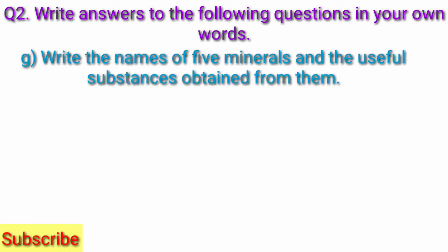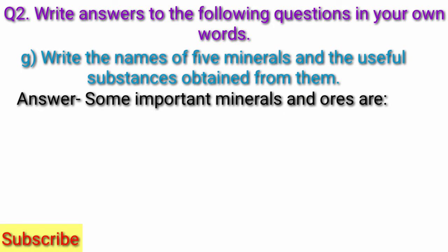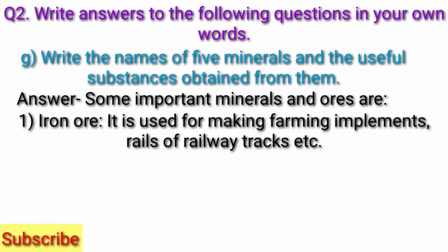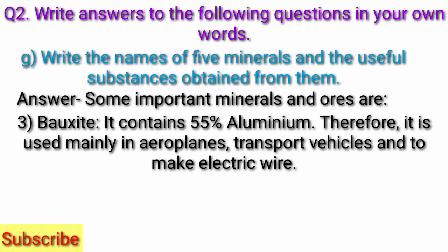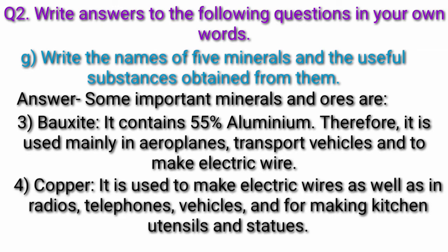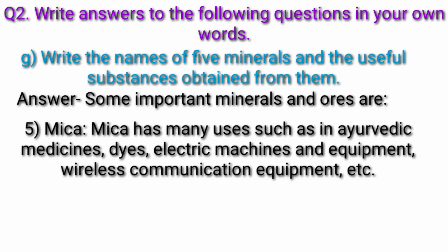Question g) Write the names of five minerals and the useful substances obtained from them. Answer: Iron ore — used for making farming implements and rails of railway tracks. Manganese — compounds of manganese are used in preparation of medicines and for giving a pink tinge to glass; also used in electrical appliances. Bauxite — contains 55 percent aluminium, therefore used mainly in aeroplanes, transport vehicles, and to make electric wire. Copper — used to make electric wires, radios, telephones, vehicles, kitchen utensils, and statues. Mica — used in ayurvedic medicines, dyes, electric machines, equipment, and wireless communication equipment.